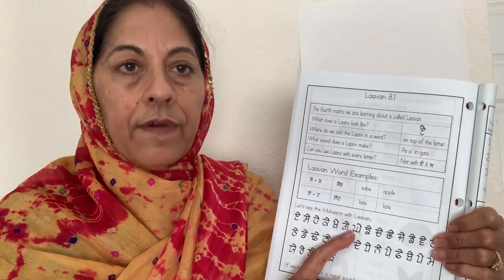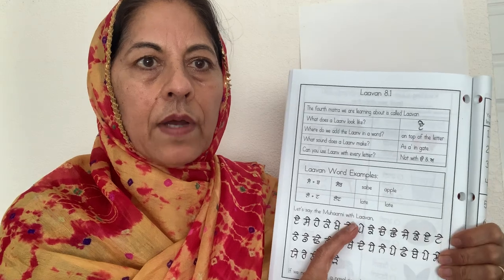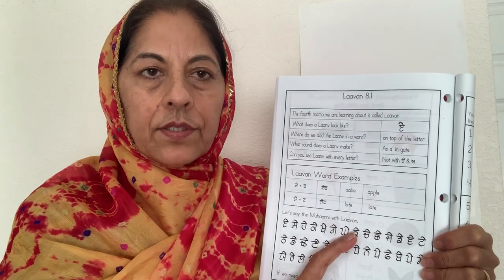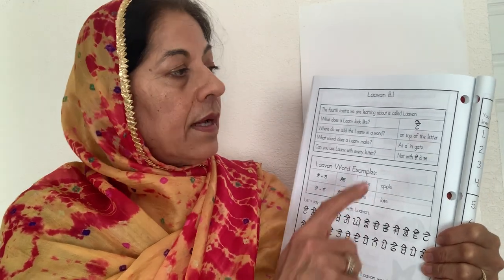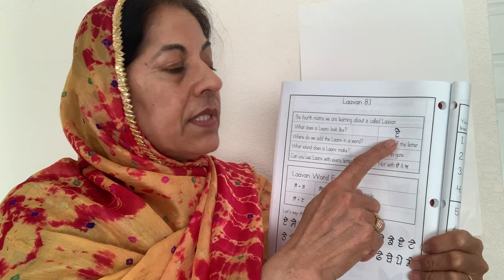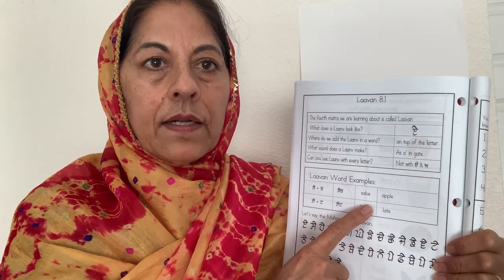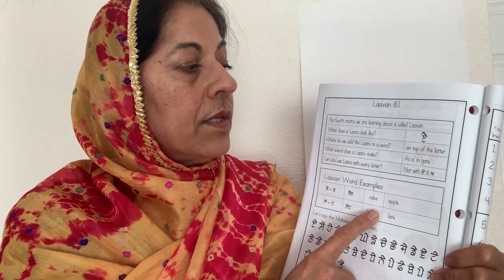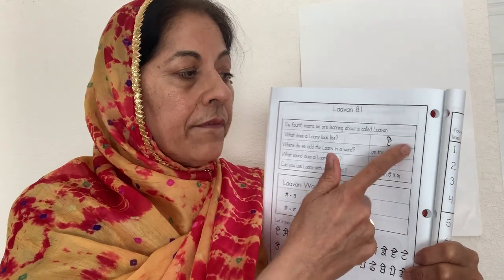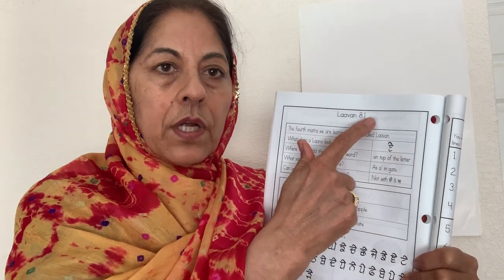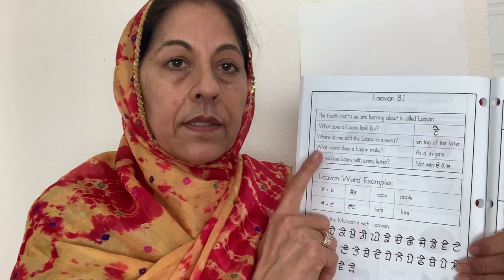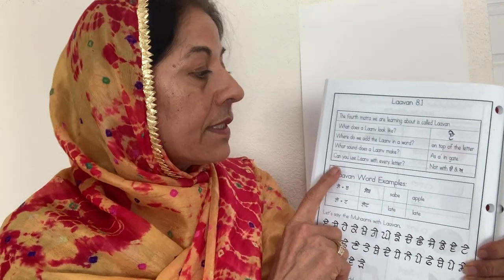Lama is a vowel symbol. In English you have A, E, I, O, U and you write them next to the letters. But in Punjabi we have Matras. They are called Matras and we write them either before the letter or after the letter, on top of the letter, or under the letter. Those are called Matras or vowel symbols.